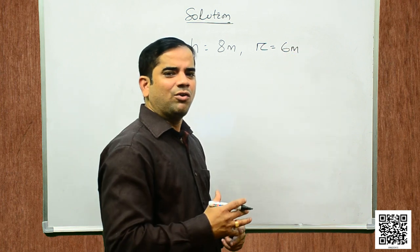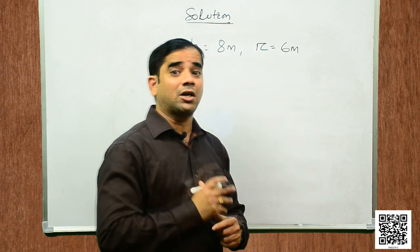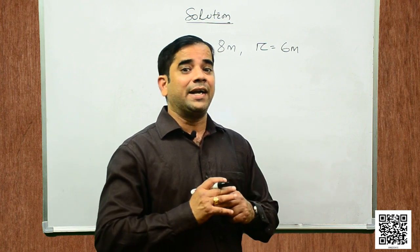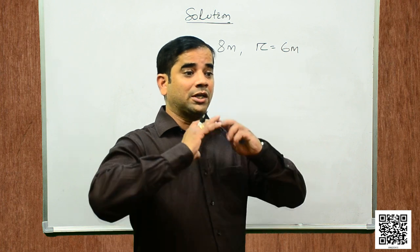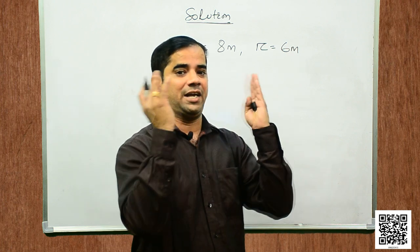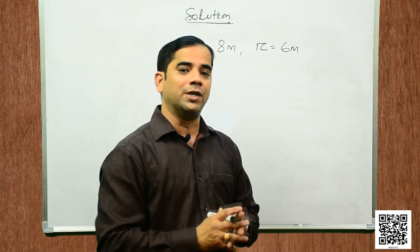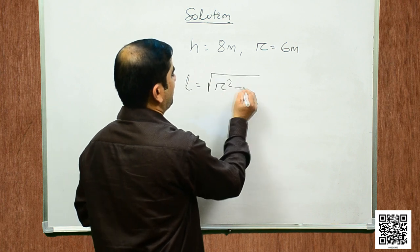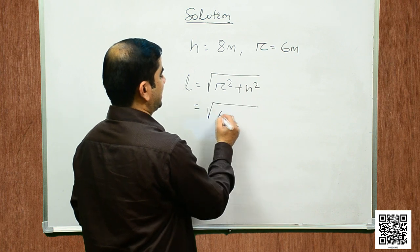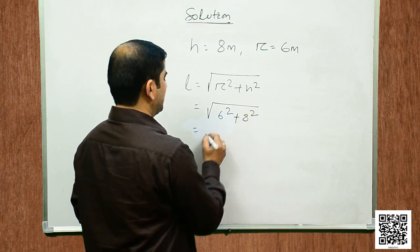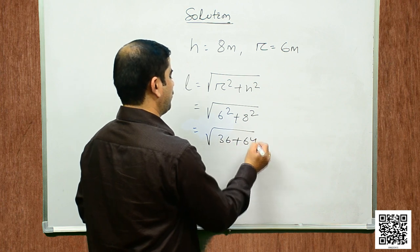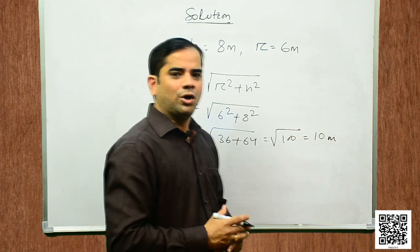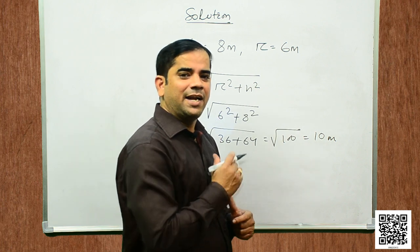Let us first find out the slant height because we need to find the curved surface area — not the total surface area, because we are going to make a tent from tarpaulin, and the tarpaulin is going to cover the curved surface area. So, l is equal to square root of r² + h², which is square root of 6² + 8², that is square root of 36 + 64, square root of 100, which is 10 meters. So, the slant height of the tent is 10 meters.